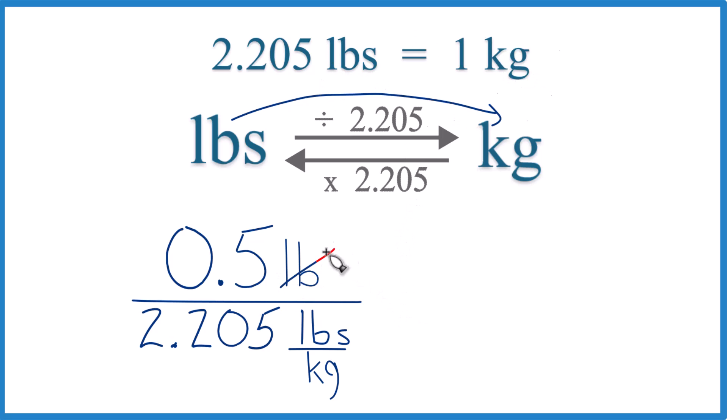And since we have pounds on top and pounds here, they cancel out. We're going to be left with kilograms. That's what we're looking for. So essentially, it's 0.5 divided by 2.205. That gives us 0.2675. Let's call it 0.227.